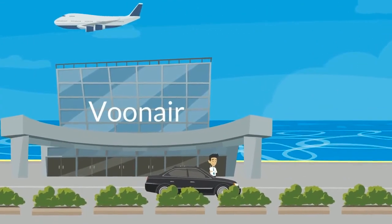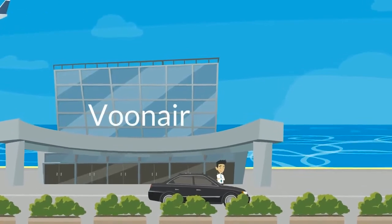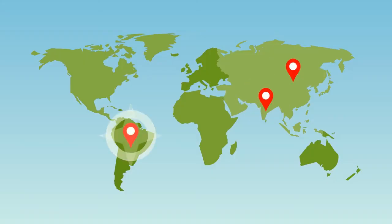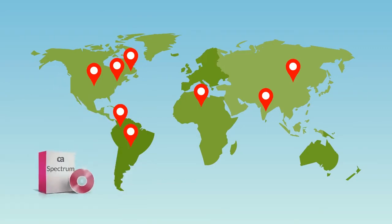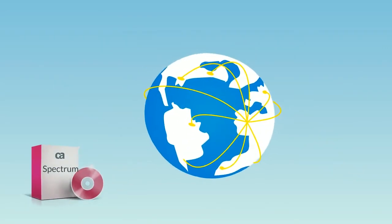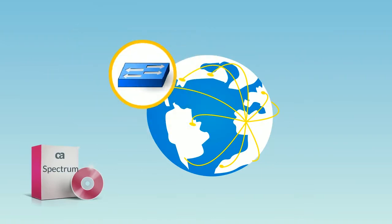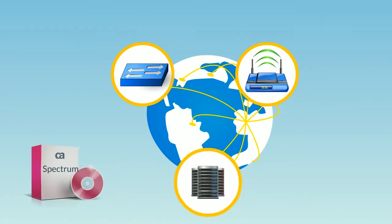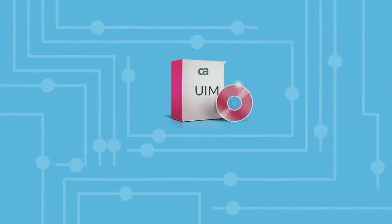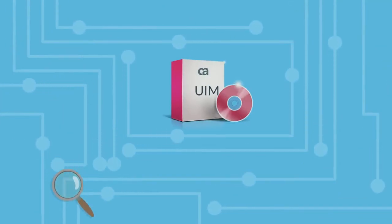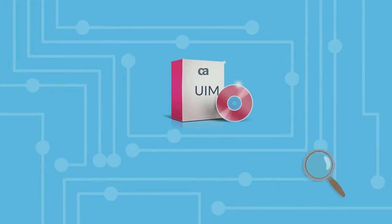Vunaire Airlines is a large airline company that operates flights to all major tourist destinations and has a huge IT environment to support their business. They use CA Spectrum to monitor and manage various devices on the network, including switches, routers, and virtual data centers. In addition, they use CA Unified Infrastructure Management to monitor and manage performance and availability across complex environments.